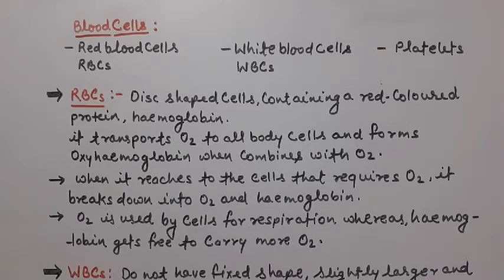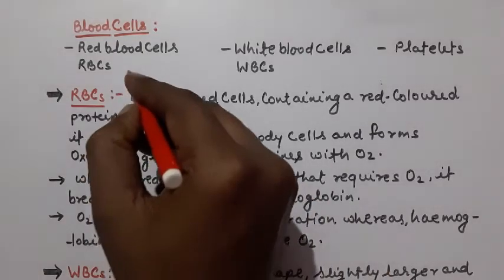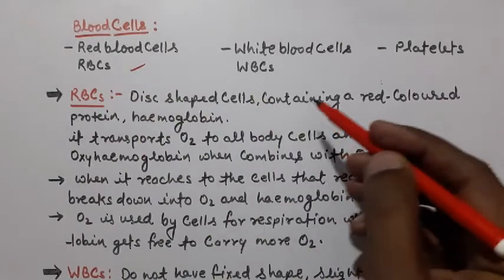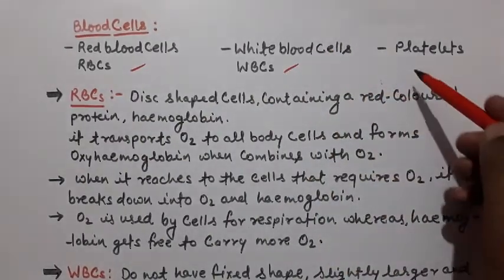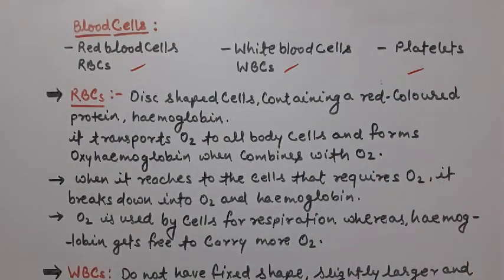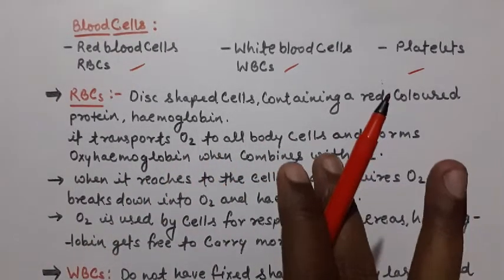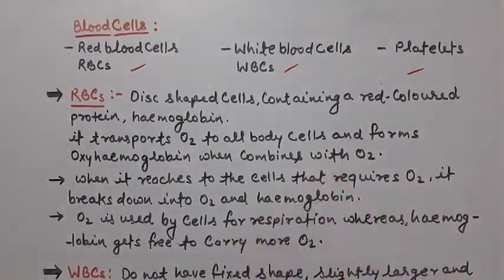Students, let us start today's class. As I had told you, blood cells are classified into three categories: the first one is RBC, red blood cells; WBCs, white blood cells; and platelets. In this class we will discuss about these three blood cells.